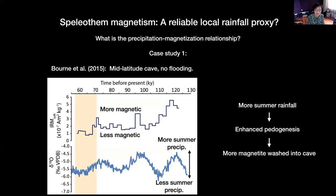Let me go over three case studies. The first is the Born et al. paper from about six years ago — a mid-latitude cave in West Virginia. They concluded that higher magnetic content of the speleothem corresponds to wetter summers, more summer rainfall. That's because it correlates with enriched oxygen 18-O episodes, believed to correspond to more summer precipitation, which enhances pedogenesis and the formation of fine-scale magnetite that gets washed into the cave.